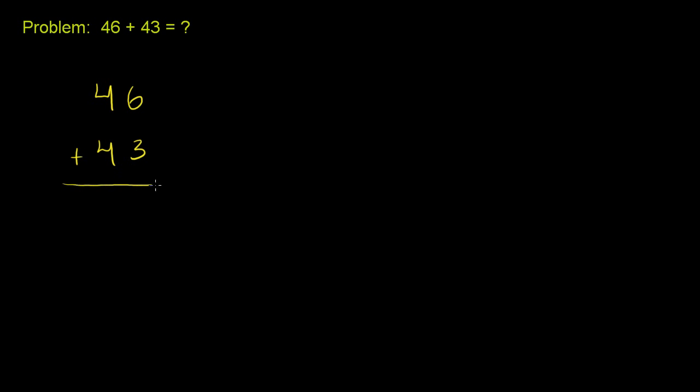What we do here is we first look at the ones place. We literally have six ones plus three ones, or you could say six and three, and six plus three is just nine. Six plus three is nine, so we have nine ones.